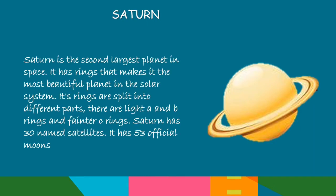Saturn is the second largest planet in space. It has rings that make it the most beautiful planet in the solar system. Its rings are split into different parts — there are the bright A and B rings and the fainter C ring. Saturn has 53 official moons and 13 named satellites.